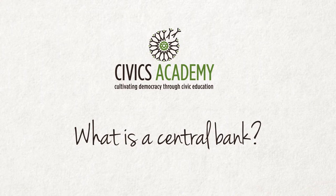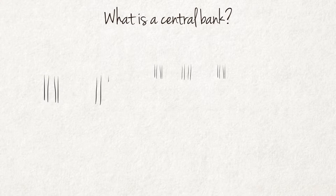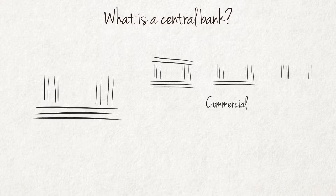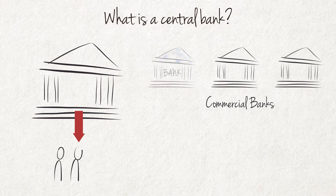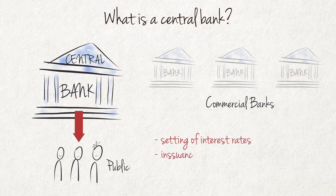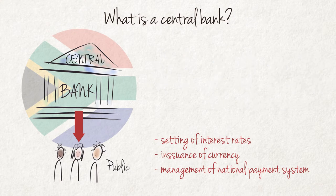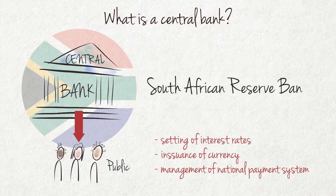What is a central bank? A central bank has unique powers that differentiate it from other commercial banks. Some of these powers, which influence the public in an immediate and direct way, include the setting of interest rates, the issuance of currency, and the management of the national payment system. No other bank in the country has such powers, which shows the special place of the central bank in the economy. South Africa's central bank is the South African Reserve Bank.